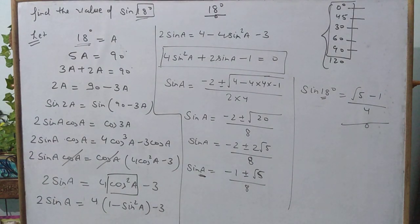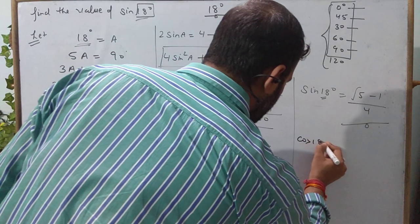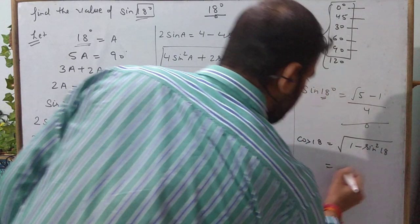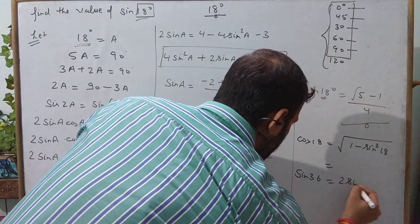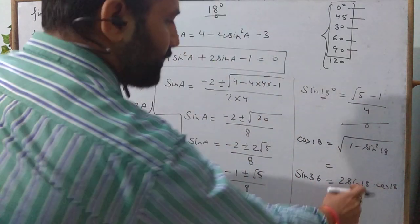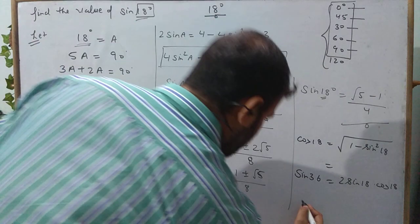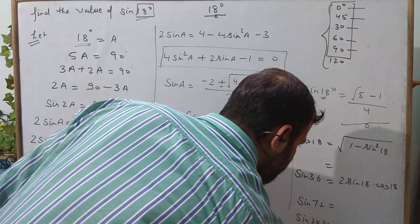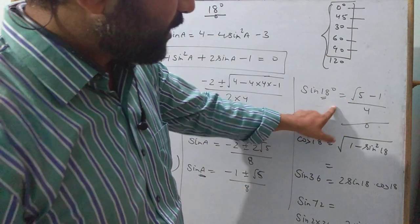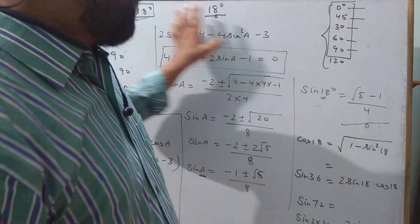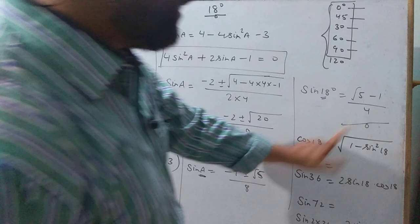Learn this value: sin18° = (√5 − 1)/4. Using this, cos18° = √(1 − sin²18°) — substitute and simplify. Then sin36° = 2sin18°cos18°. If this is a 1-mark question you can directly write the value; if it is 3 or 4 marks, you must show the full derivation. So cos18°: put the value of sin18°, take the square root and simplify.